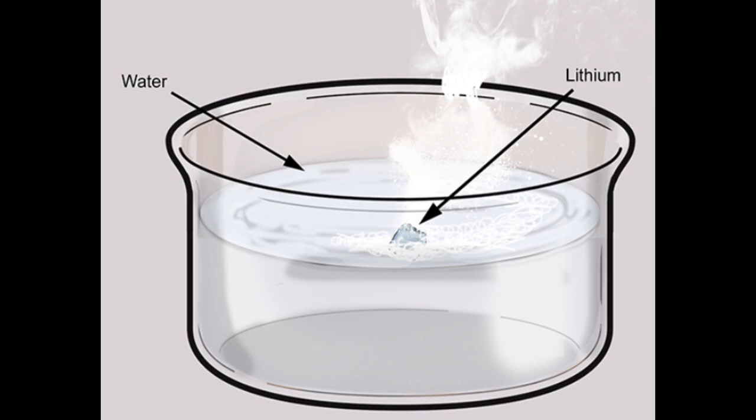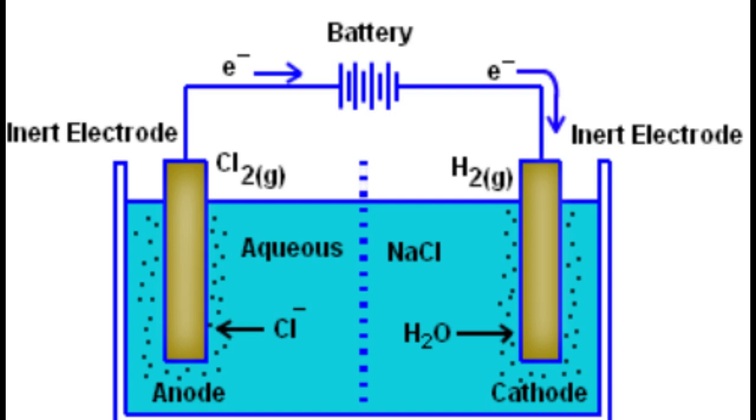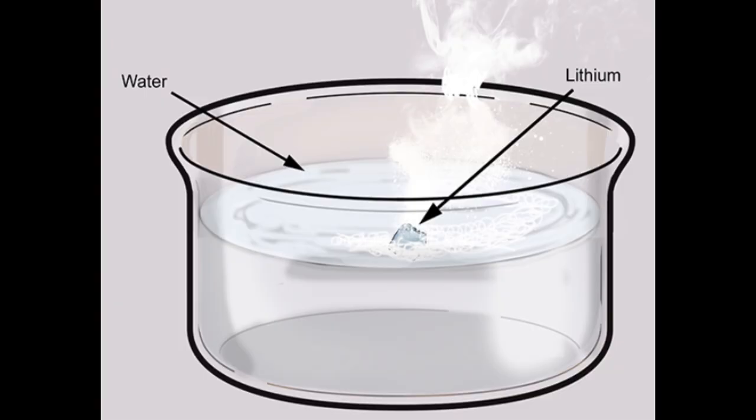Experimentation with lithium can take various forms depending on the context, whether in a chemistry laboratory, education setting, or industrial research. Experiment 1 — Chemical Reactivity. Objective: Demonstrate lithium's reactivity with water. Procedure: Cut a small piece of lithium metal using tongs, then drop the lithium into a container of water. Observe the reaction, noting the production of hydrogen gas and the formation of lithium hydroxide. Safety precautions: Perform this experiment in a controlled environment with proper safety measures due to the reactive nature of lithium.